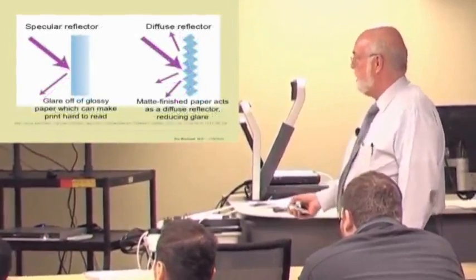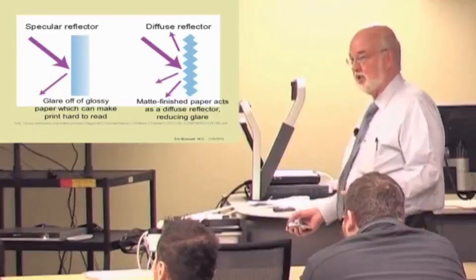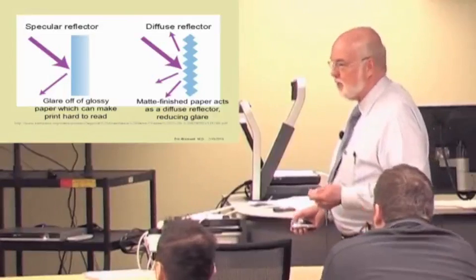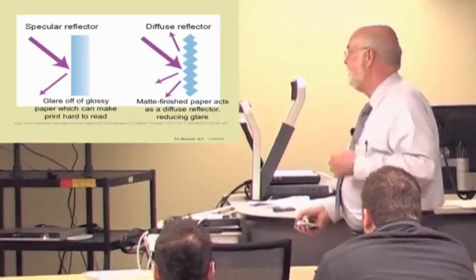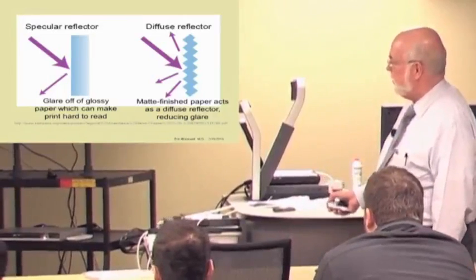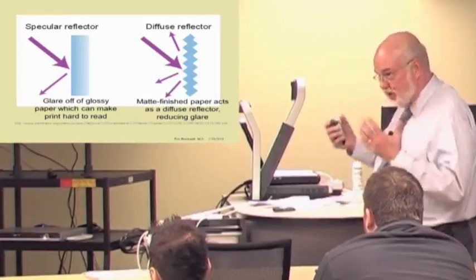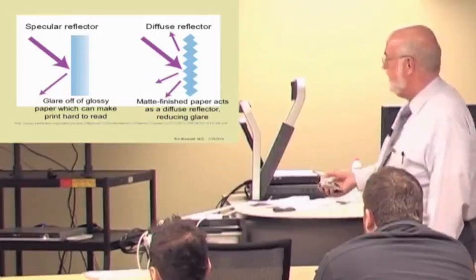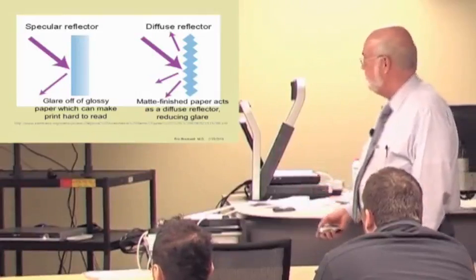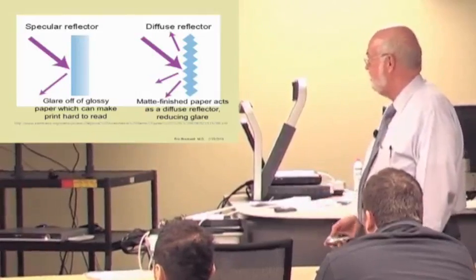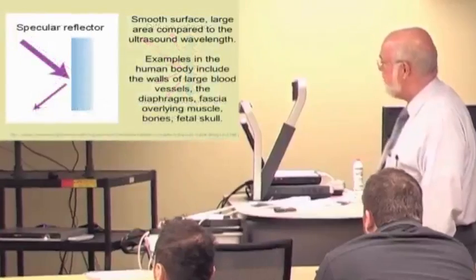Another example, specular reflector, the glare off of glossy paper or off of a glossy screen, one of my pet peeves with Macintosh. Hard to read because what you're seeing is the reflection of the light, not the print on the page. The matte finished paper doesn't flood your eyes with that reflected light. Actually, a good thing to have a diffuse reflector there because it's easier to read the print.